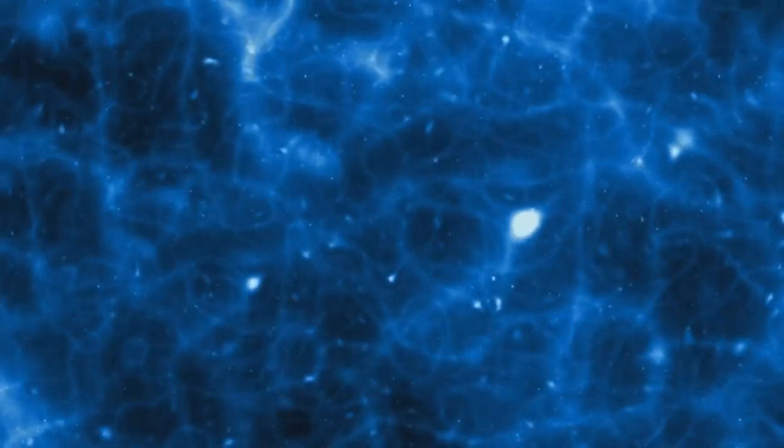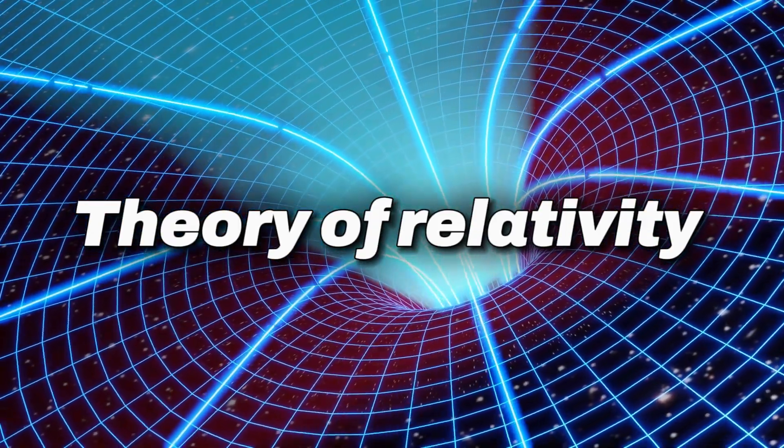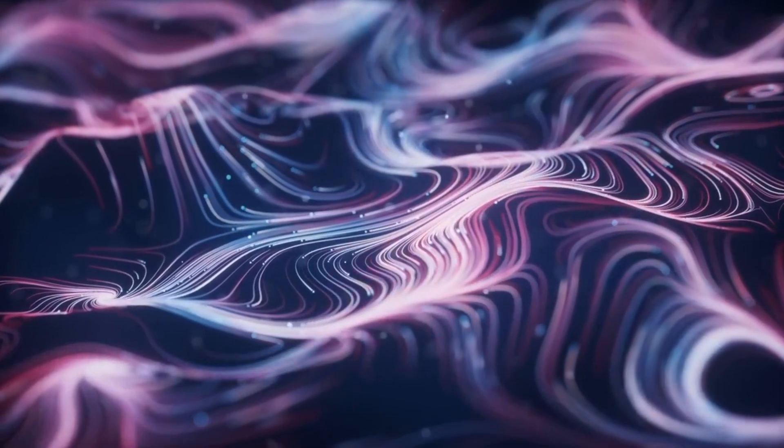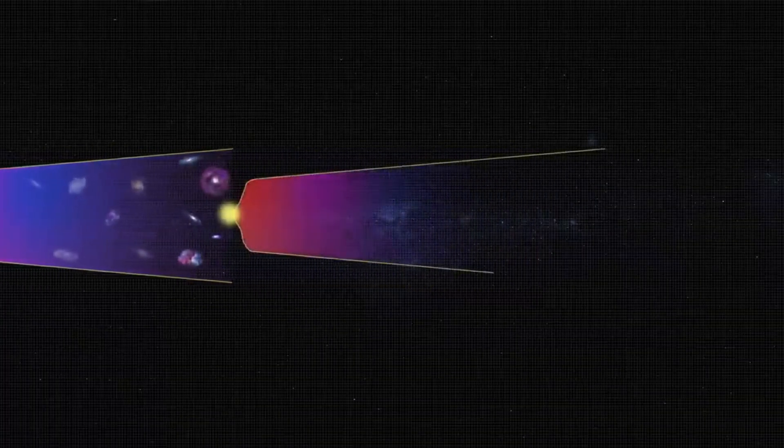Another puzzle is the flatness problem. Einstein's theory of relativity reveals that massive objects curve spacetime, influencing the motion of matter within it. Locally, stars, galaxies, and black holes cause irregularities in this spacetime fabric.